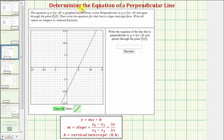The equation y equals 2x minus 10 is graphed below. We want to graph a line perpendicular to the given line that goes through the point (5,0), and also write the equation for that line in slope-intercept form, or the form y equals mx plus b.